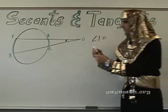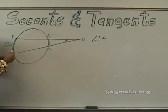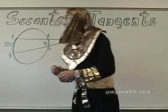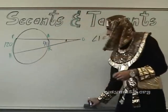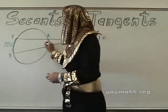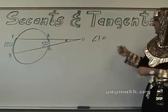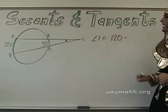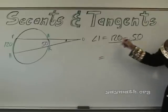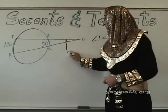Let's go ahead and do numbers. We give this arc 120 and this one 50. Big minus small over 2: angle one equals 120 minus 50 is 70, over 2 is 35 degrees. Angle one equals 35 degrees.